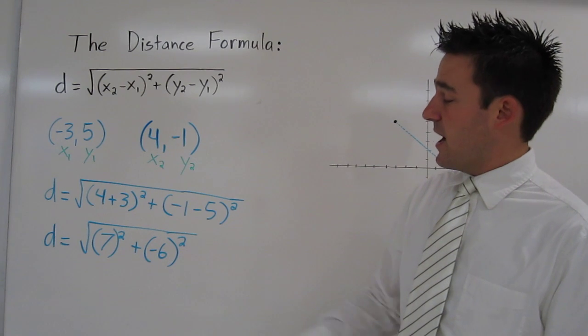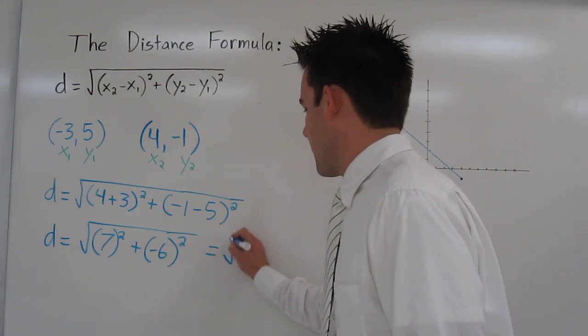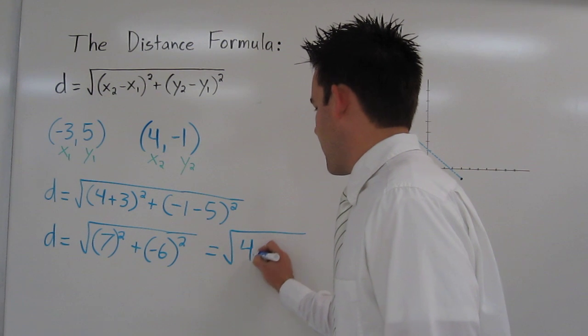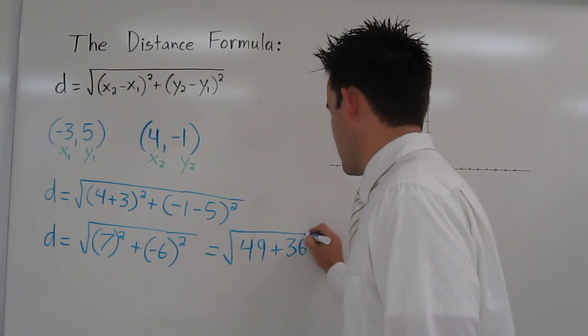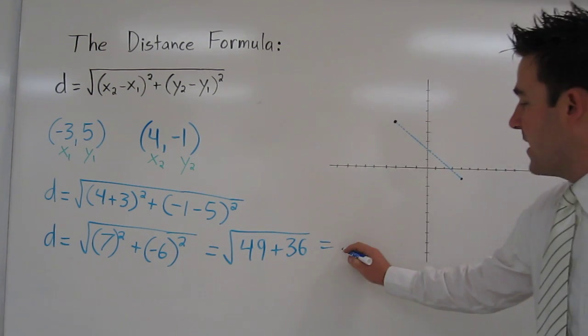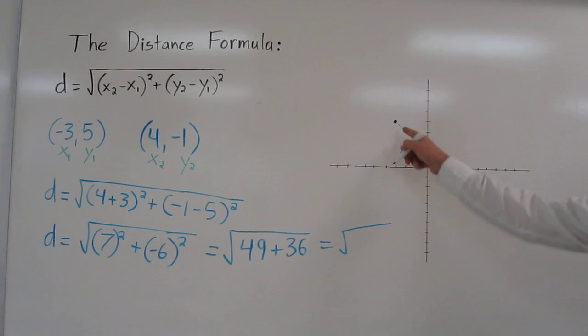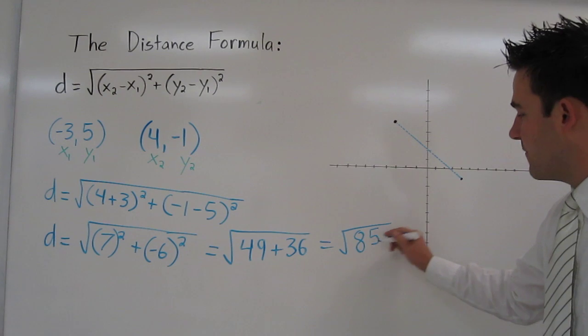7 squared is 49. Negative 6 squared is 36. And adding 49 and 36, we find out the distance of our blue line is equal to √85.